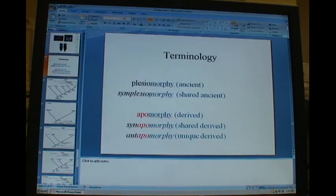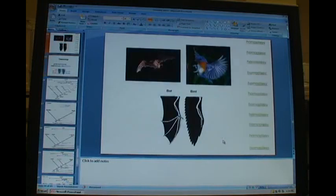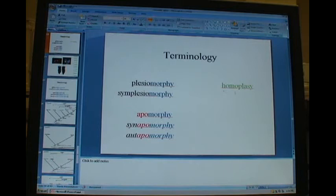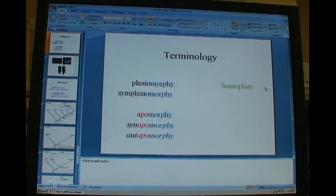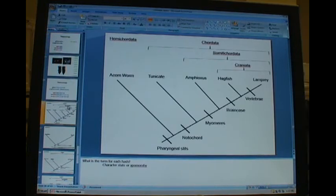Plesiomorphy: ancient, shared ancient. Apomorphy: derived, shared derived, unique derived. Somewhat of a digression, you might see this term homoplasy, which is synonymous with analogy. Traits that result from homoplasy are a product of convergent evolution. You don't want to try to incorporate these kinds of traits to build a tree. Knowing this, let's use an example.